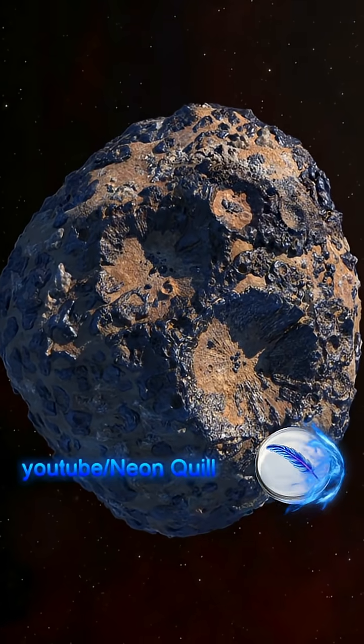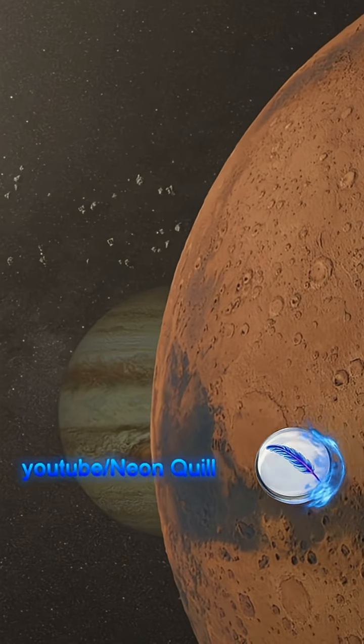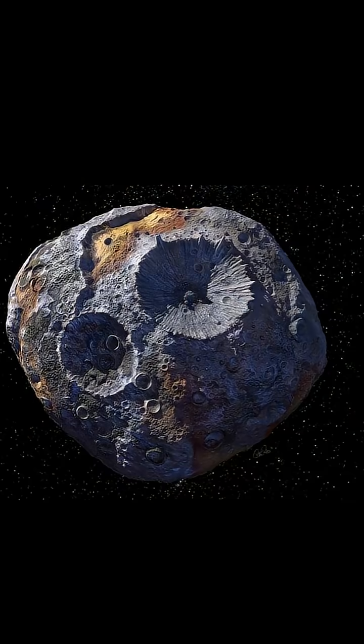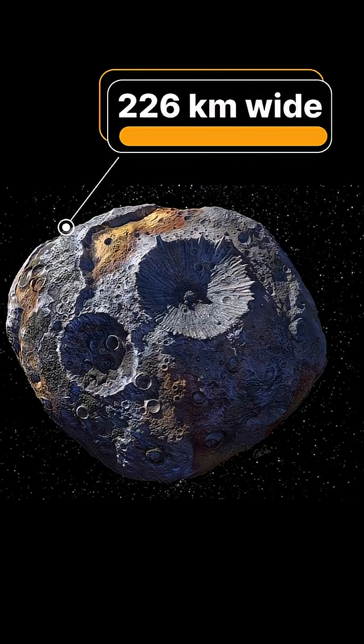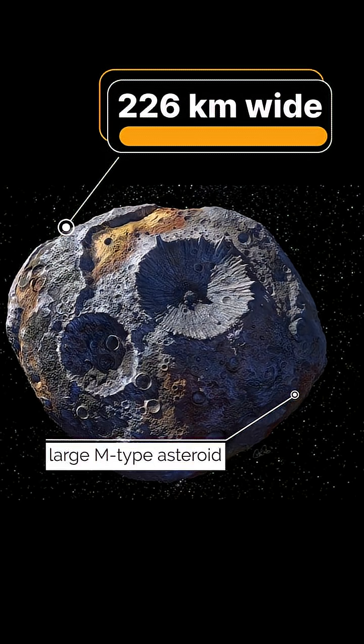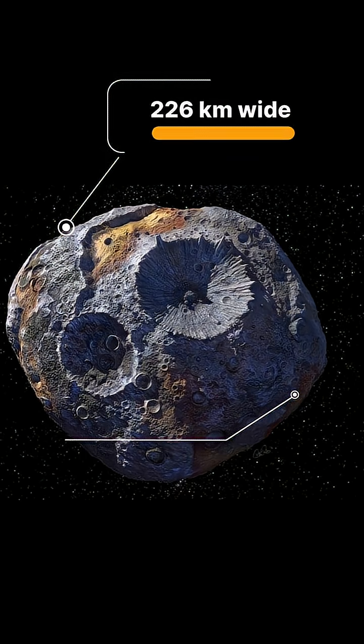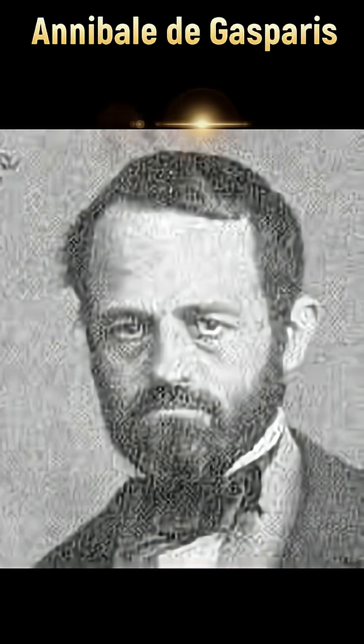16 Psyche is an asteroid located in between Jupiter and Mars in the main asteroid belt. Measuring about 226 kilometers wide, it is classified as a large M-type asteroid, first discovered by the Italian astronomer Annabelle de Gasparis on March 17, 1852.